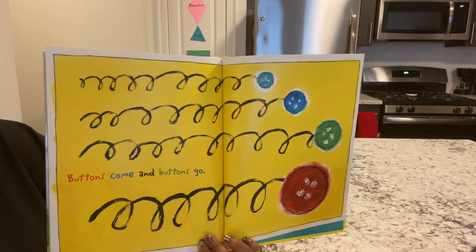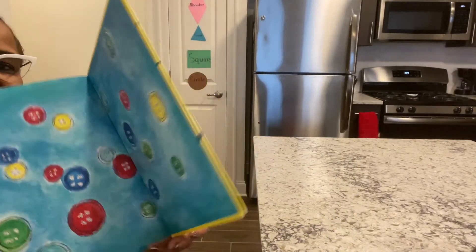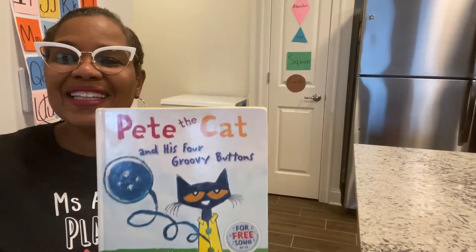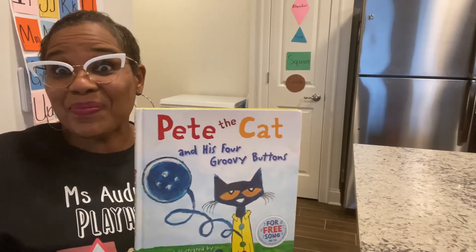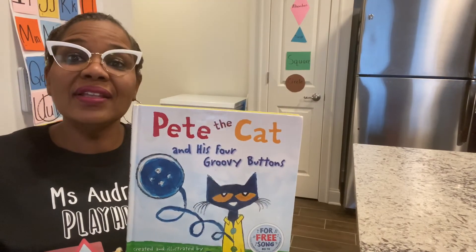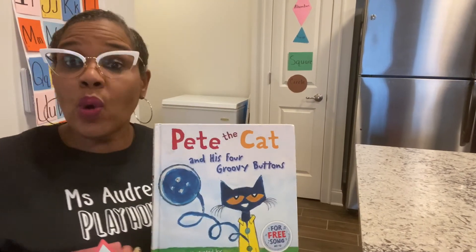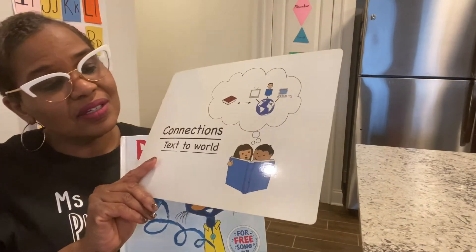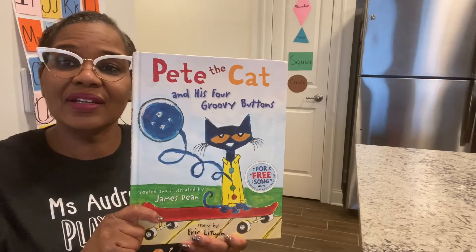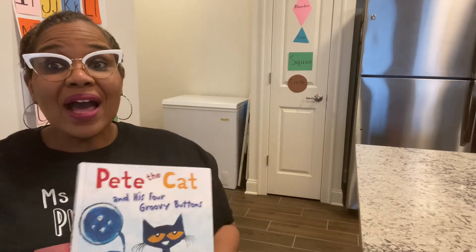Buttons come and buttons go. Did you like that story? I did. It had music in it — we sung a song. Pete the Cat and His Four Groovy Buttons. Remember we started off about connections? What connection can you make? You know what? I once had a button on my shoe and the button came off. So there are times you can have a button on your shoe. Some people might have lost a button on their shirt. It's all good. We can get another one.